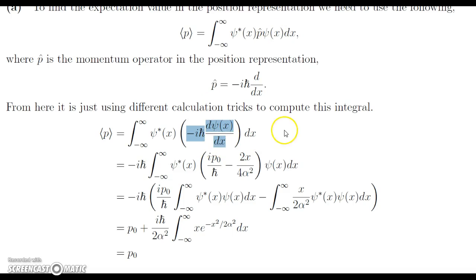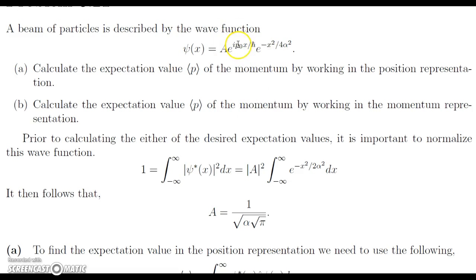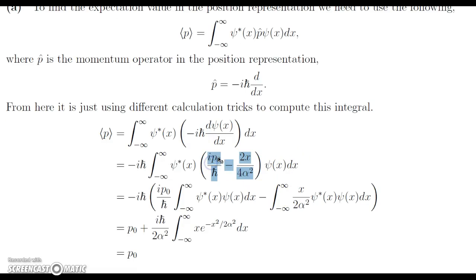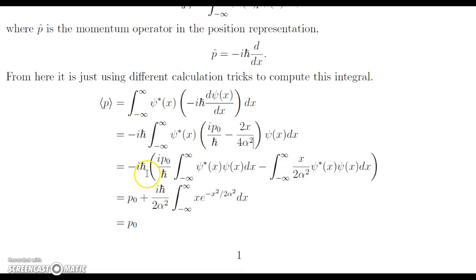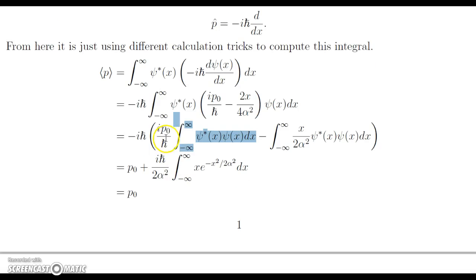Instead of writing the exponentials out separately, we note that since they are exponentials we can combine the two terms as one exponential, and when we differentiate we just get the derivative of the exponent multiplied by the same exponential. So we leave the wave function and write the derivative of the exponent: i·p₀/ℏ minus 2x over 4 alpha squared. We can break this into two integrals. The first is negative iℏ times i·p₀/ℏ times the normalization integral, which equals 1 since the wave function is normalized, so the h-bars cancel and the i's give a positive, leaving p₀.